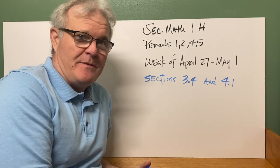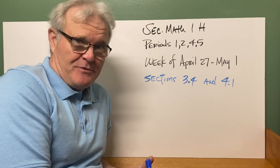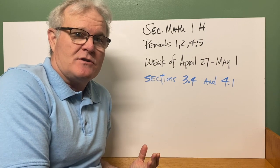This week we are going to cover sections 3.4 and 4.1. Remember, we finished up Chapter 12 last time. That was on getting triangles to be congruent.